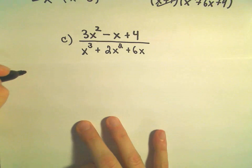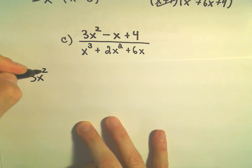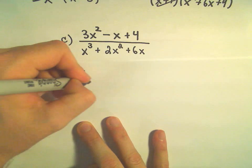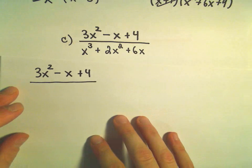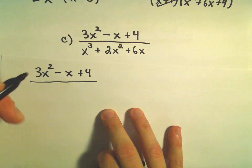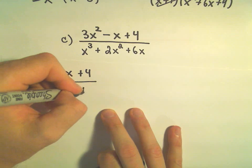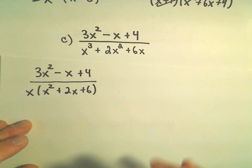Okay, so the first thing I'm going to do here is I'm going to try to factor the denominator as much as possible. Well, certainly I see that we can pull an x out of here, and then I would have x² + 2x + 6 left over.